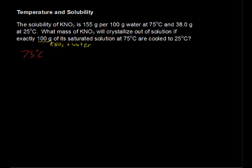So at 75 degrees, color coding it red for hot, I'll go to blue for cooling down to 25 degrees. At 75 degrees, the solubility is 155 grams per 100 grams of water. Keeping the unit straight across, we've got the solute in the numerator, KNO3. We have x, we don't know how much KNO3, that's our unknown, how much KNO3 in the total 100 grams.